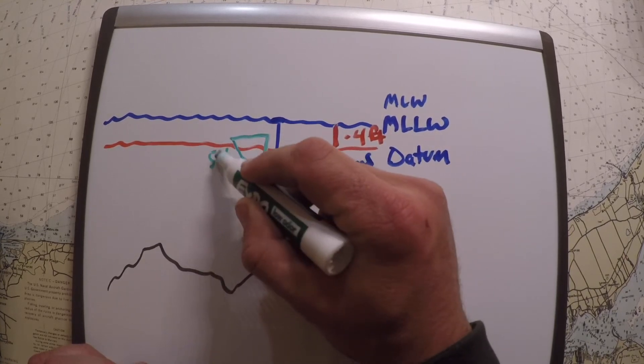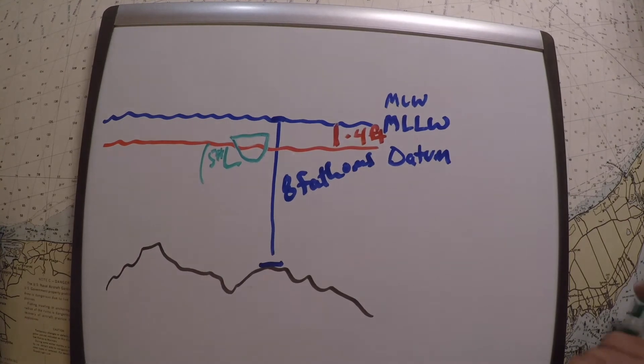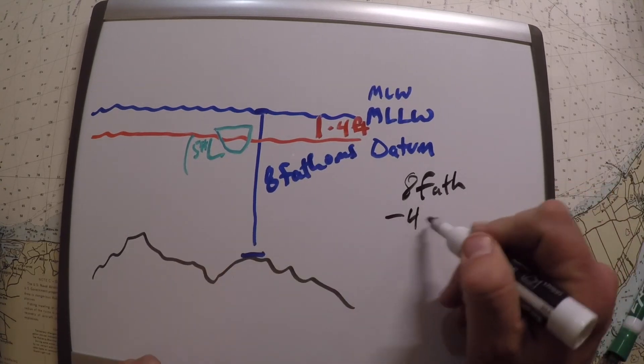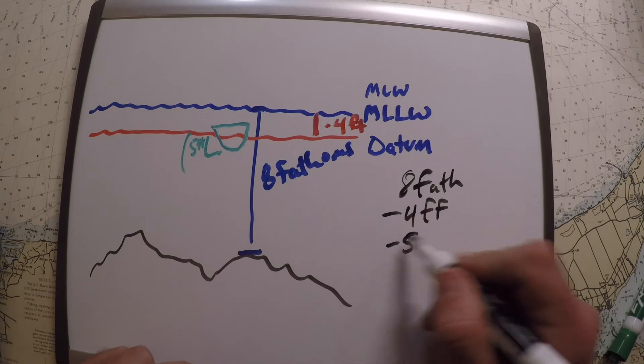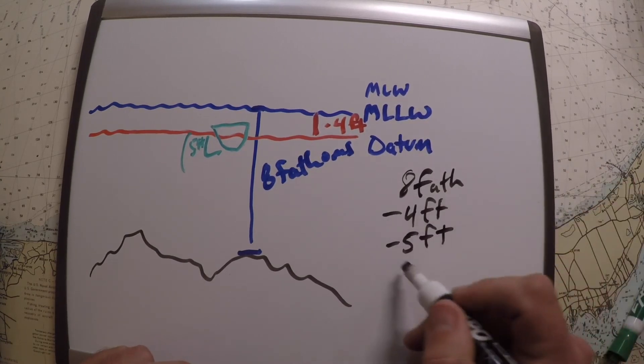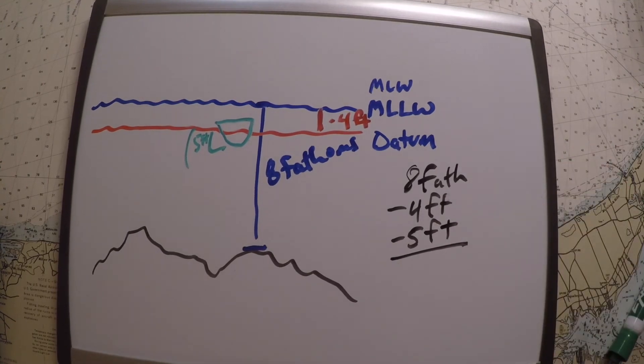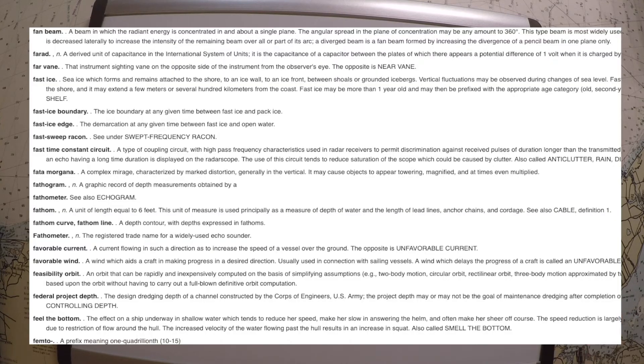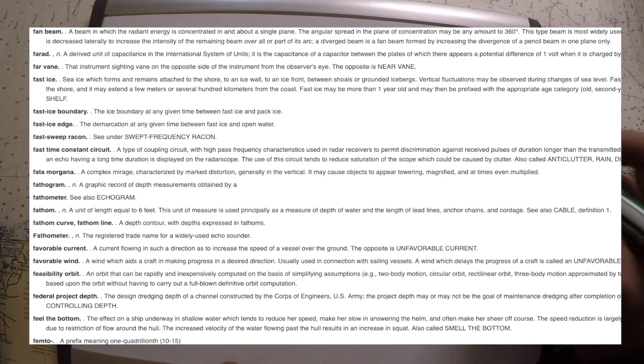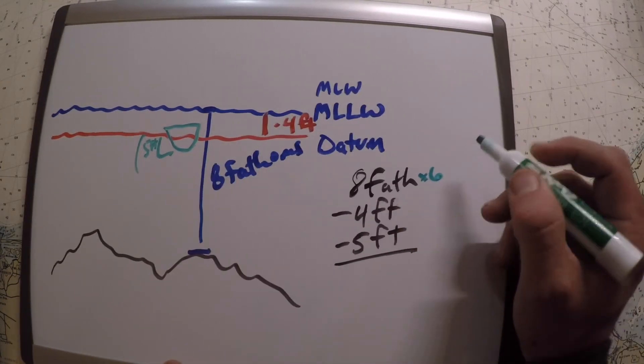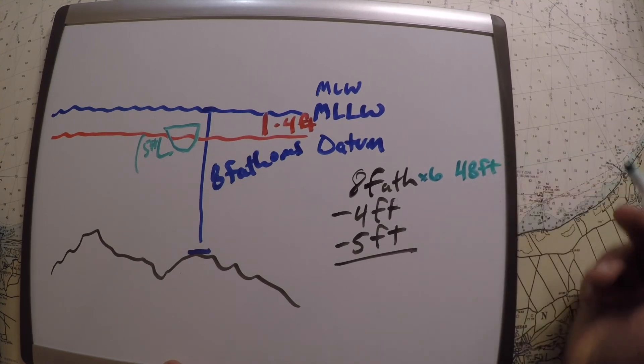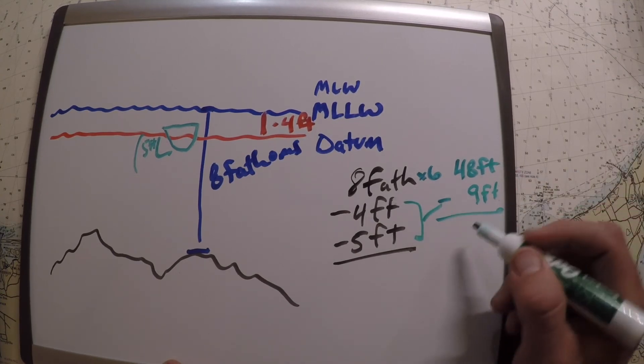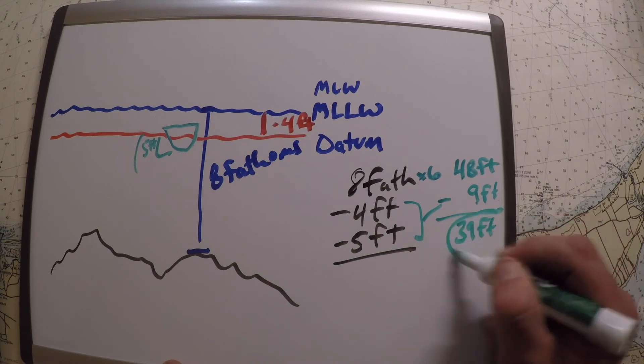And we draw 5 feet. So in essence, the problem is asking us to take 8 fathoms minus 4 feet minus another 5 feet because of our draft. And how would we solve that? Well, you can't subtract fathoms from feet, so you have to convert fathoms to feet. And there are 6 feet in a fathom. All right, so that means this times 6 equals 48 feet. And then this is all kind of minus 9 feet for these two here.